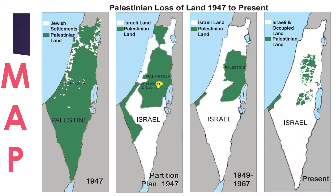That dot right there in the middle represents the holy city of Jerusalem, which is considered holy to three major religions: Judaism, Christianity, and Islam — the religions we all learn about in class. Both Israelis and Palestinians claim Jerusalem as their capital.